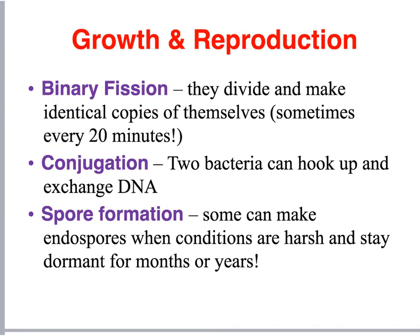There are three different ways bacteria can copy themselves, grow, or reproduce. Binary fission — they make identical copies of themselves, taking up to 20 minutes in some bacteria, allowing them to reproduce hundreds to thousands of times. Conjugation is where two bacteria combine and exchange genetic information, kind of like bacteria sex.